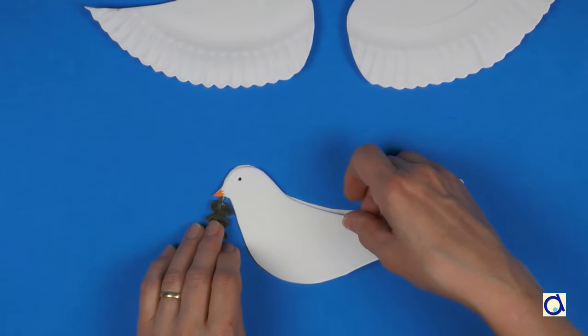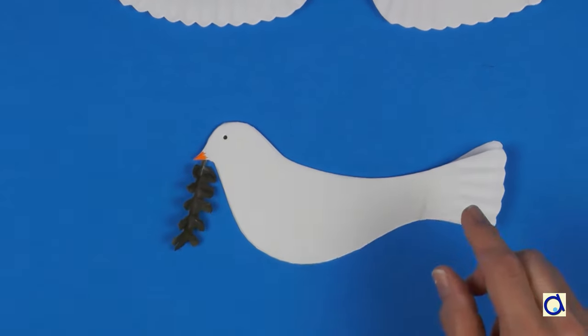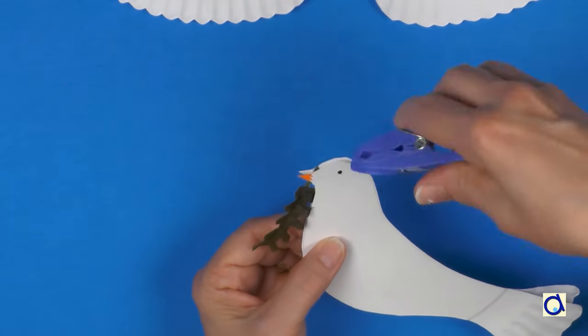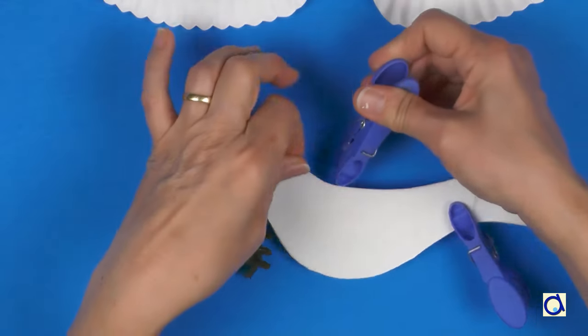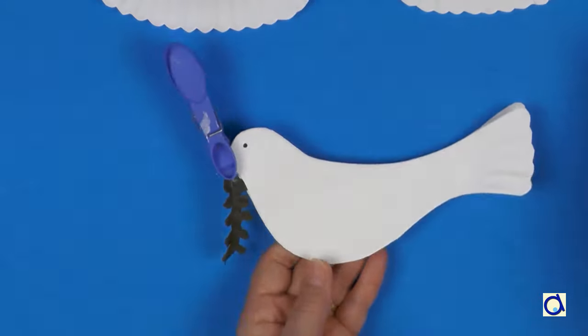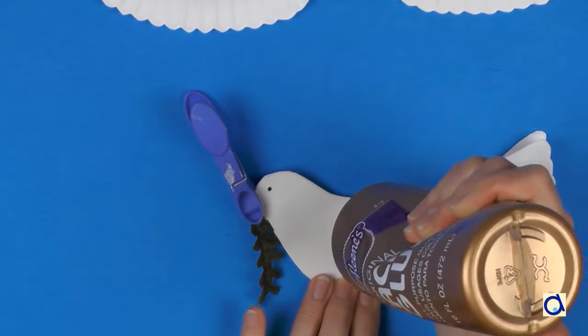Next, glue the other side of the body on the first. Hold the two parts of the body together with clothespins. When the two parts of the body seem to stick together, remove the clothespins.